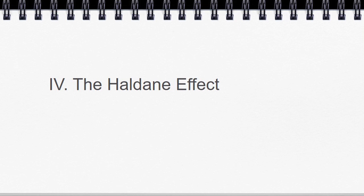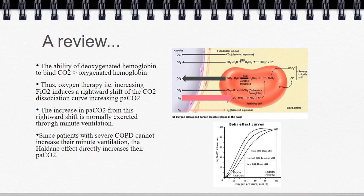Let's talk about the Haldane effect. Deoxygenated hemoglobin has a much greater affinity for CO2 than oxygenated hemoglobin. However, when you place a patient on oxygen therapy, an overwhelming concentration of oxygen displaces that CO2 from the hemoglobin, shifting the Bohr curve rightward and increasing the concentration of CO2. In normal patients we can increase minute ventilation to get rid of the excess CO2, but patients in severe COPD exacerbation have no room to increase their minute ventilation, so this causes increased retention — essentially creating more dead space.